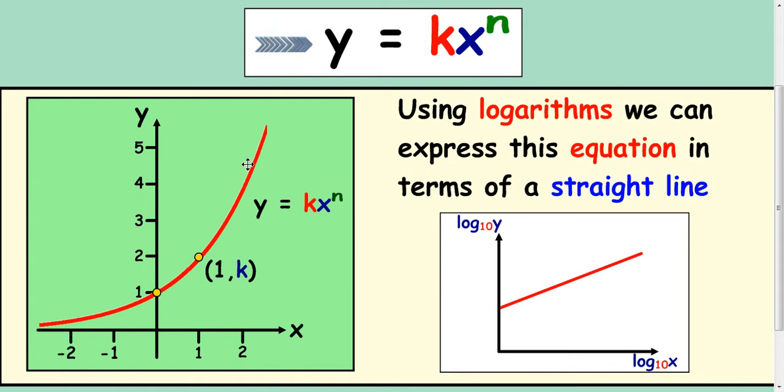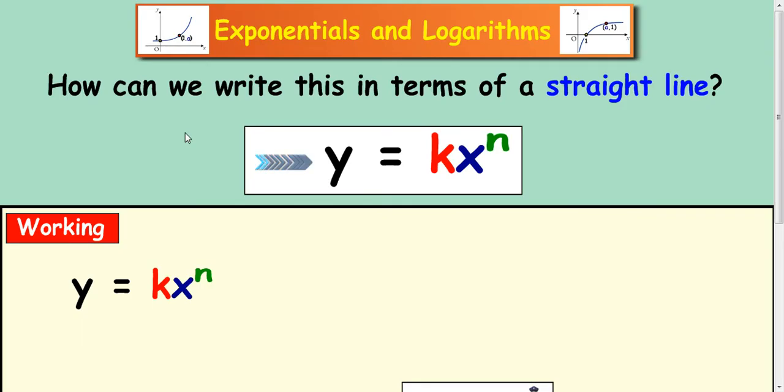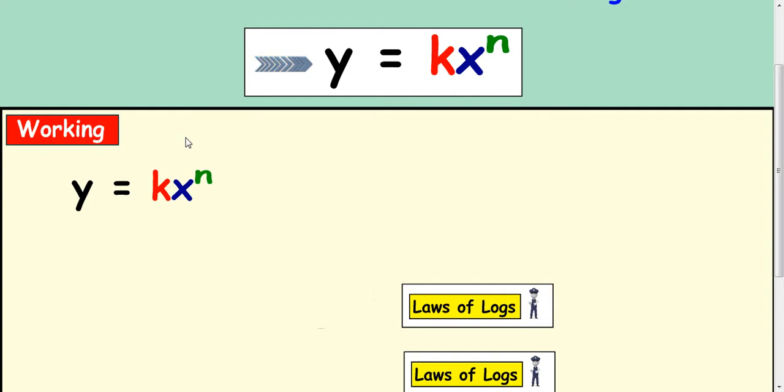Now, the way to do that is to take logs of both x and y axis. If you take logs of both the x and y axis in this format here, then you end up with a straight line. Now, how do we end up with a straight line from this? Well, I'm just going to show you.